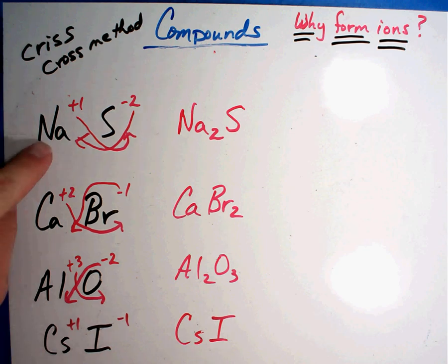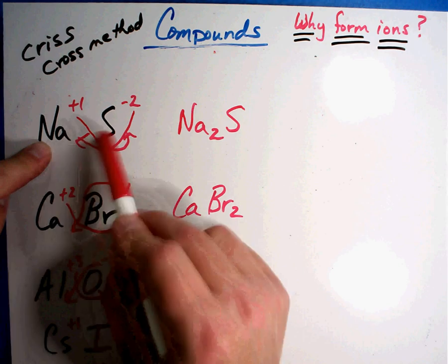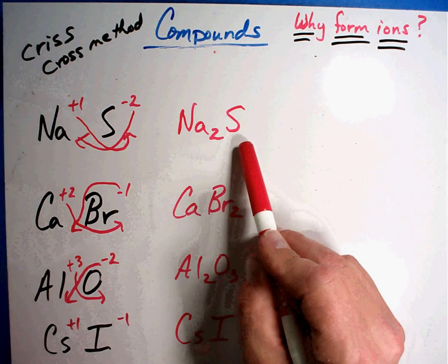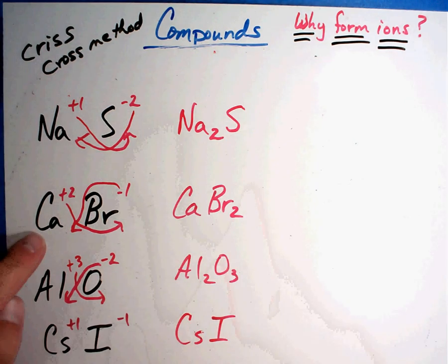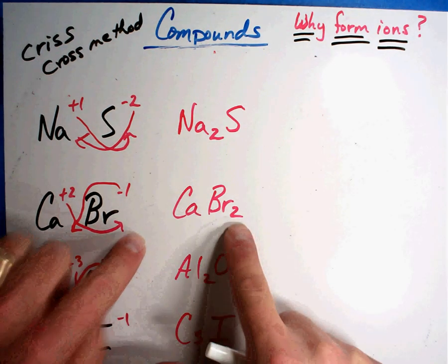So let's see if that's right. Na two S one. Oh, that's the right answer. Ca, the one moves over and you don't write the one. Br and the two moves out there. That's correct.